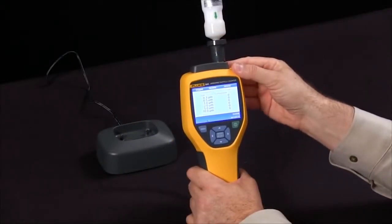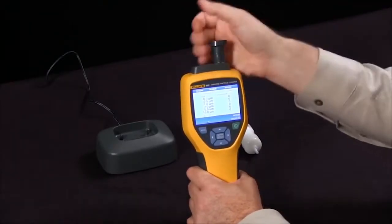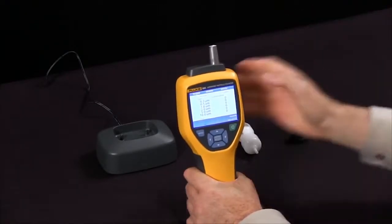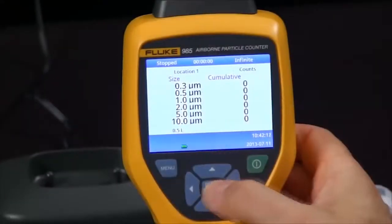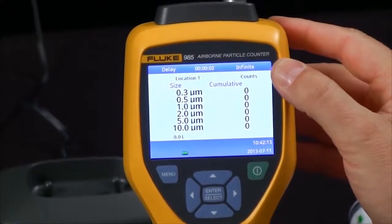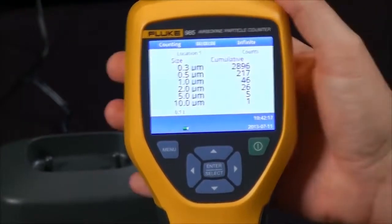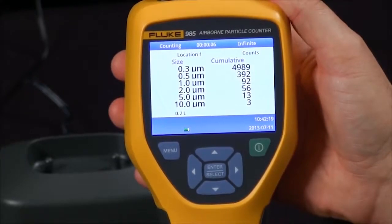Now we're ready to take a sample. Simply take off the zero pass filter and the adapter and then we can start our reading. Simply press the sample button again and you will see that our particle count is accumulating according to what we have in the air.